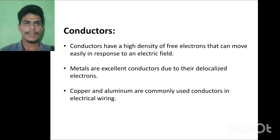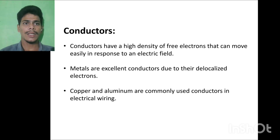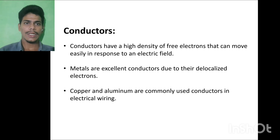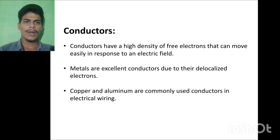Conductors have a high density of free electrons that can move easily in response to an electrical field. Metals are excellent conductors due to their delocalized electrons. Copper and aluminium are commonly used conductors in electrical wiring.